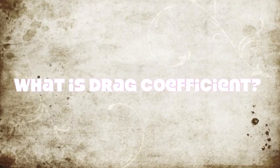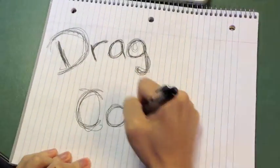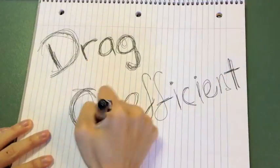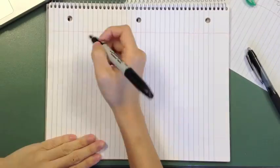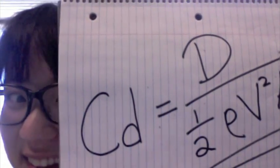What is drag coefficient? The drag coefficient is a dimensionless constant used to quantify the drag force relative to the speed, density of the medium, and the shape of the object.